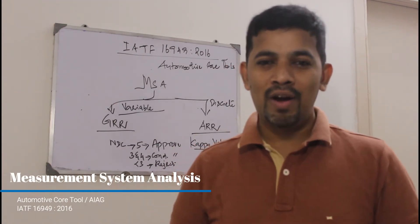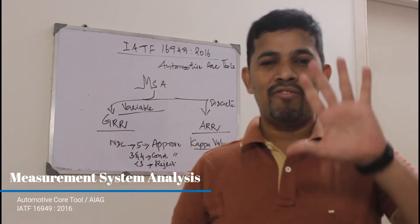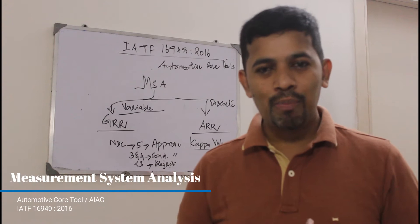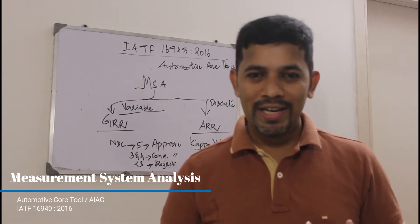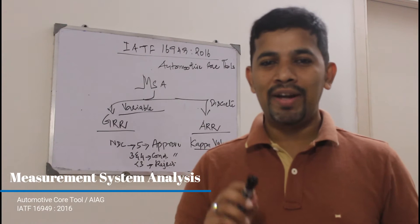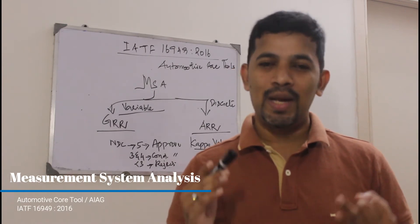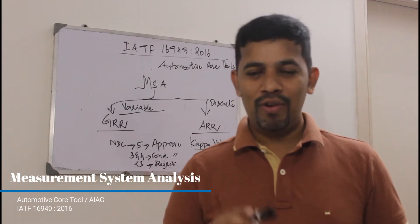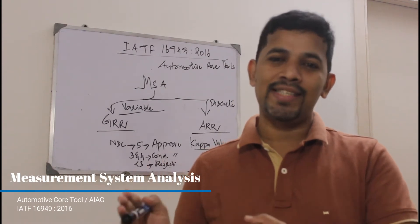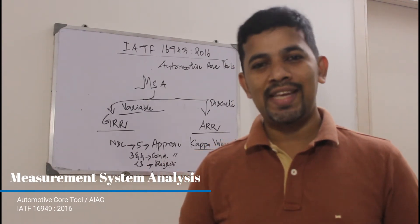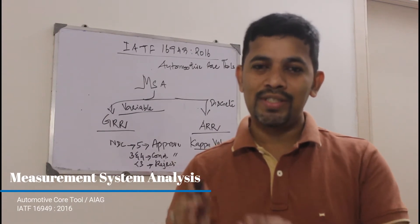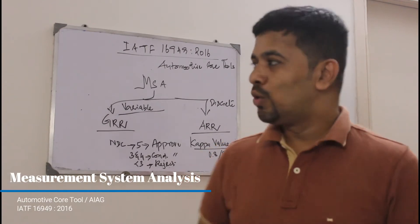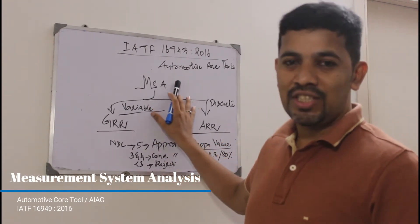There are five automotive core tools: number one is APQP — Advanced Product Quality Planning; number two is PPAP — Production Part Approval Process; number three is FMEA — Failure Mode Effect Analysis; number four is SPC — Statistical Process Control; and the last one is MSA. In this video we're going to talk about MSA.